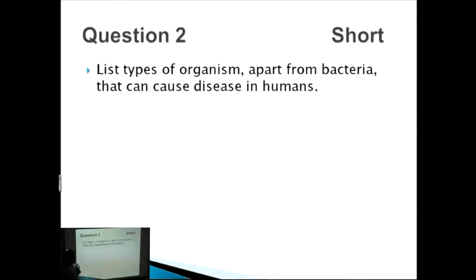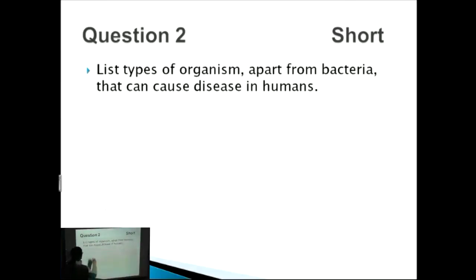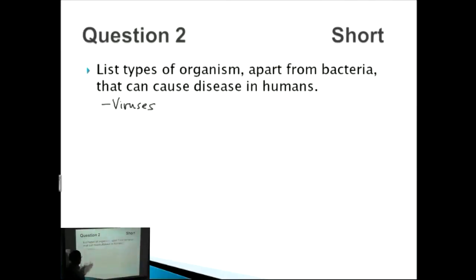The next question is quite easy, but we'll run through it anyway since it's different from the HIV question. 'List types of organisms apart from bacteria that can cause disease in humans.' We're looking for about four to five points. One of them is viruses — we just talked about HIV as an example.